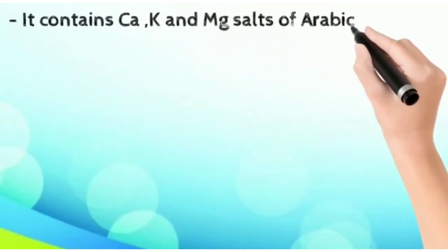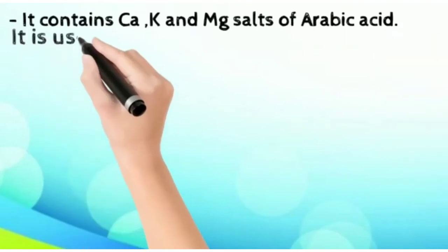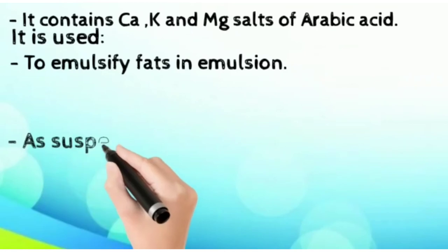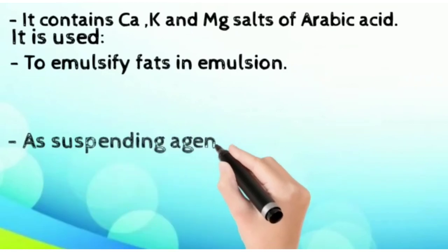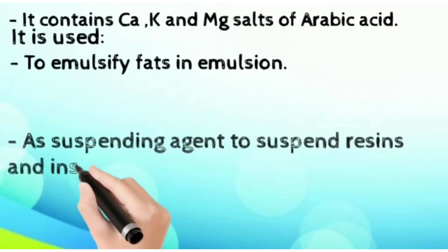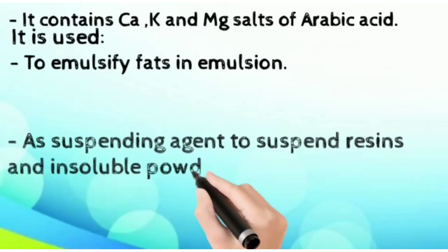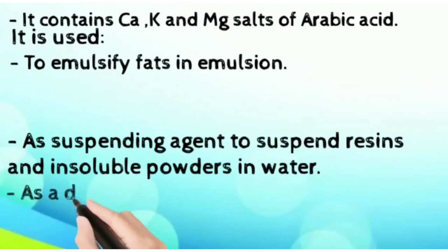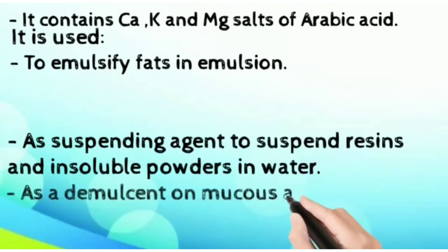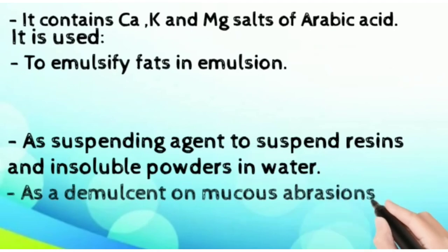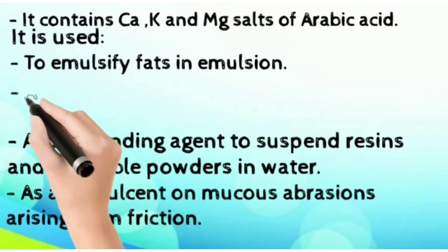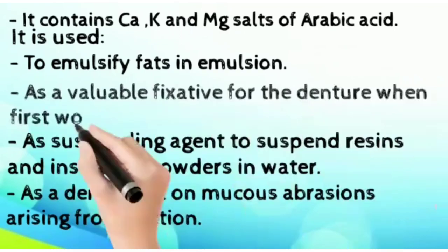Tragacanth is used to emulsify fats in emulsions, as a valuable fixative for dentures, as a suspending agent, and as a demulcent on mucous abrasions caused by friction.